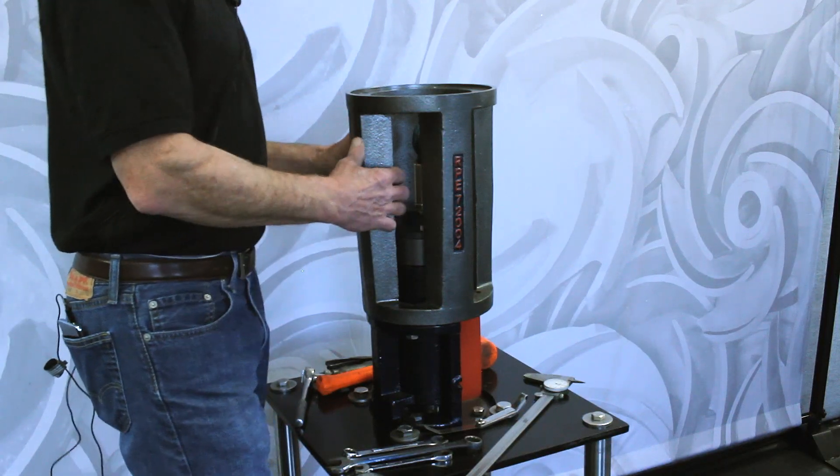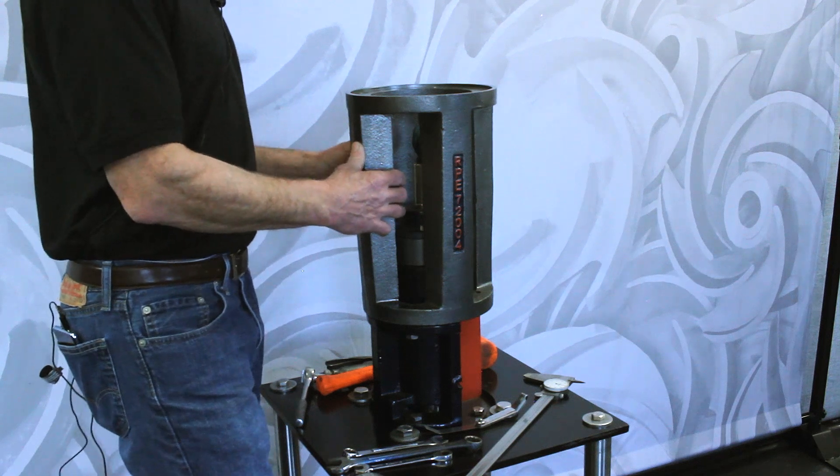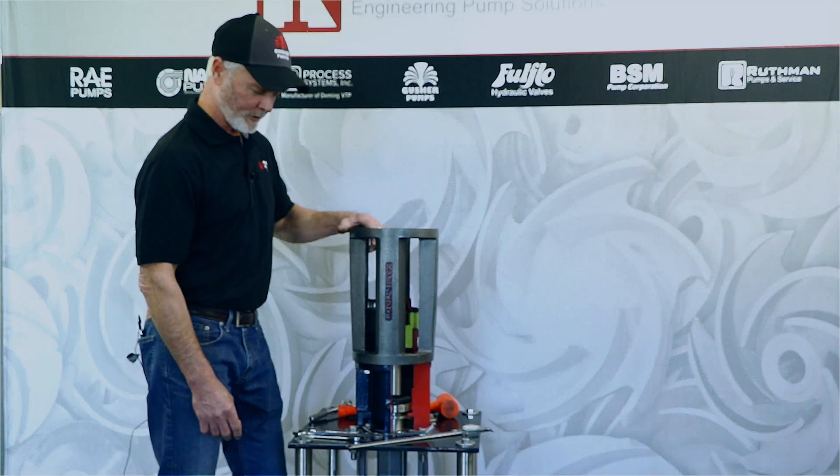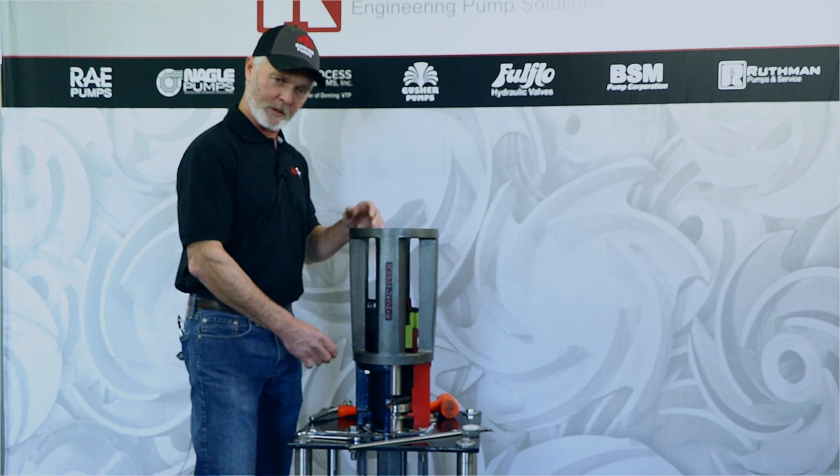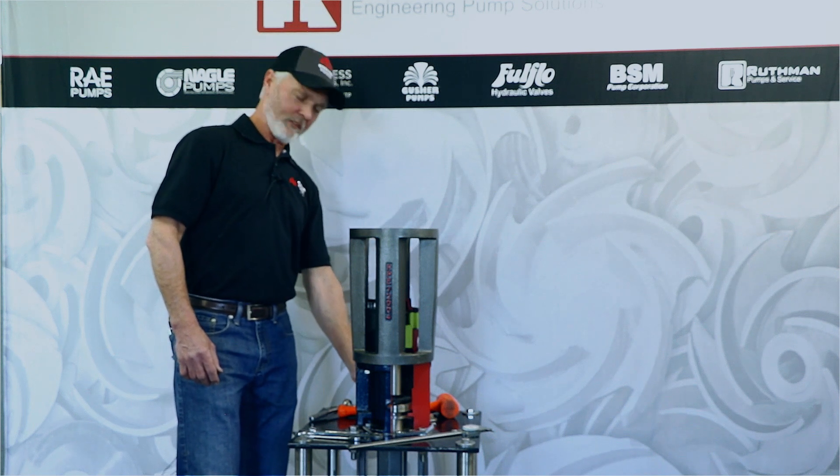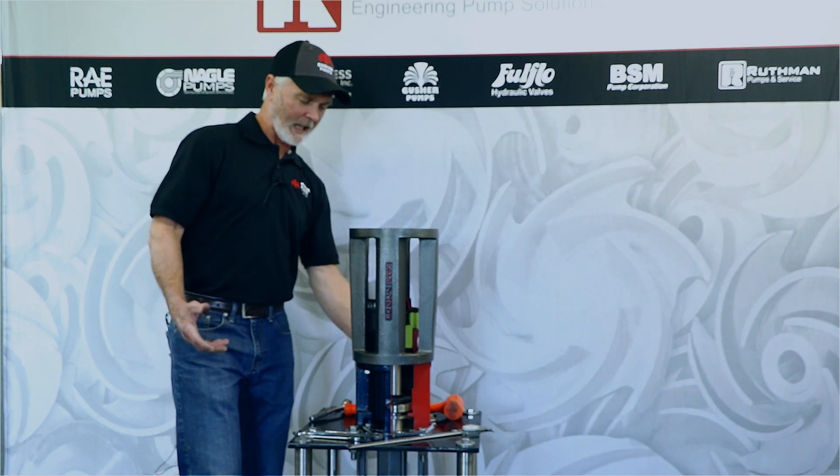The first thing you'll want to do if your motor is on the pump is remove it. It makes it much easier to do. Tools you'll need would be a three-quarter wrench, a nine-sixteenths, a seven-sixteenths, maybe a pair of vice grips and a mallet.